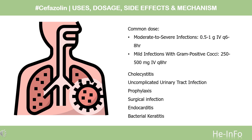Dosing: Moderate to severe infections: 0.5–1g IV/IM Q6–8HR. Mild infections with gram-positive cocci: 250–500mg Q8HR. Mild to moderate cholecystitis: 1–2g Q8HR for 4–7 days. Uncomplicated urinary tract infection: 1g Q12HR.